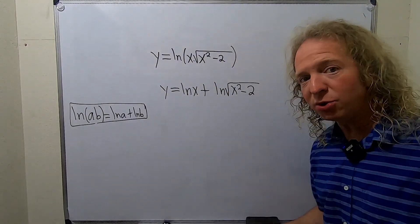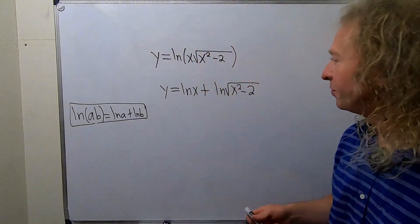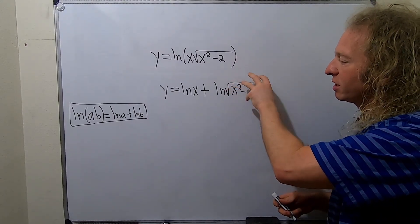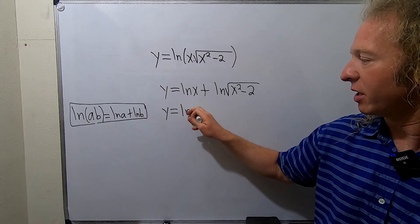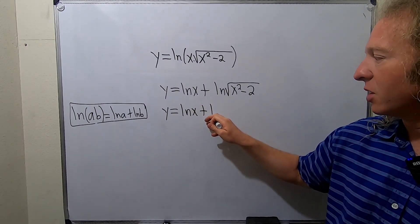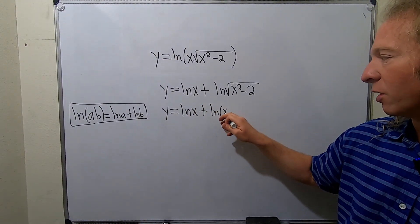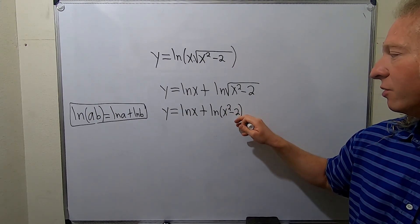We can still do something to make things a little bit better. The square root can be written as something to a power. So let's do that. This is the natural log of x plus the natural log of x squared minus 2 to the 1 half.